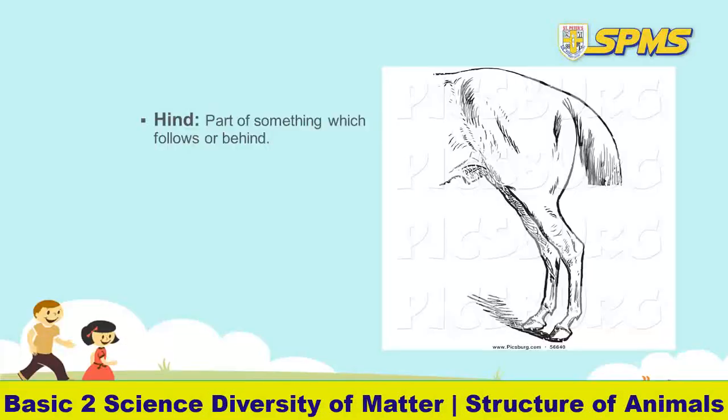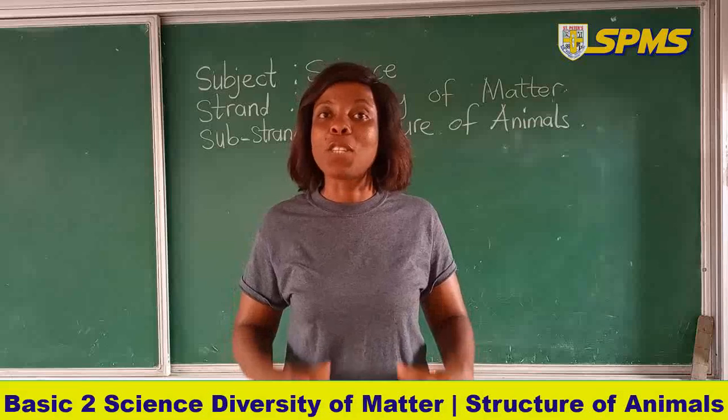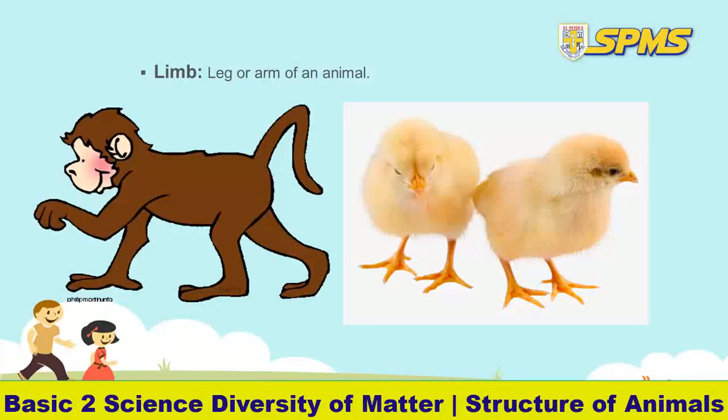Our second key word is hind. Hind means a part or something that follows or that is behind. So we are going to look at the hind part of an animal. Next is limbs. Limbs simply means the leg or the arm of an animal. Human beings also have limbs — anything that facilitates your movement is your limb.